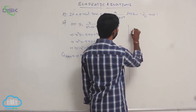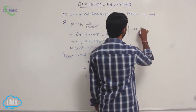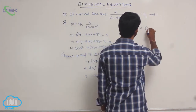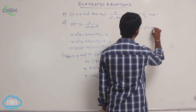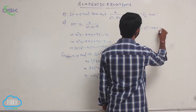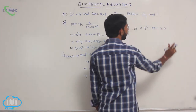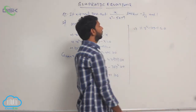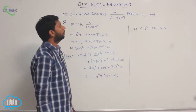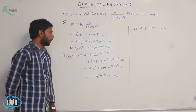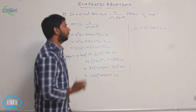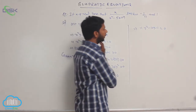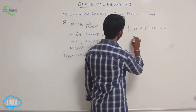That implies 11y² - 10y - 1 ≤ 0. Now split into factors: 11y² - 11y + y - 1 ≤ 0.